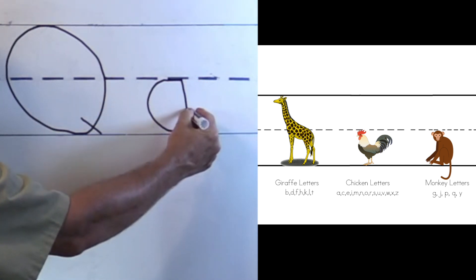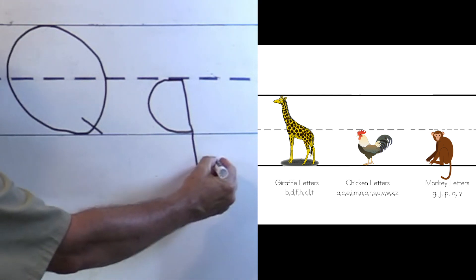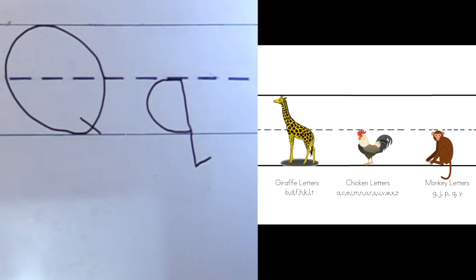And then I come back up to finish it. And I go down and remember, what do we get to do? Because it's a monkey letter, go below the line and put my little hook on there. There we go. There's the letter Q, both uppercase and lowercase.